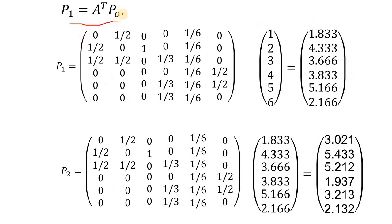Using this equation, with P0 as the assumed page rank values and A transpose from the network structure, multiplying the two gives us the page rank values for the first iteration. For example, node 1 was initially assigned a page rank of 1 and it's been modified to 1.833. Node 2 was assigned 2 and has gone up to 4.33. One node we assigned a higher value has gone down to 2.1 — the values adjust by themselves.